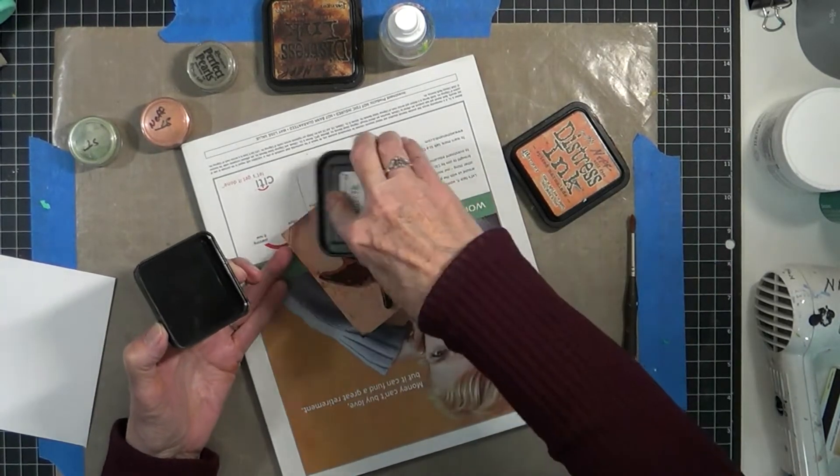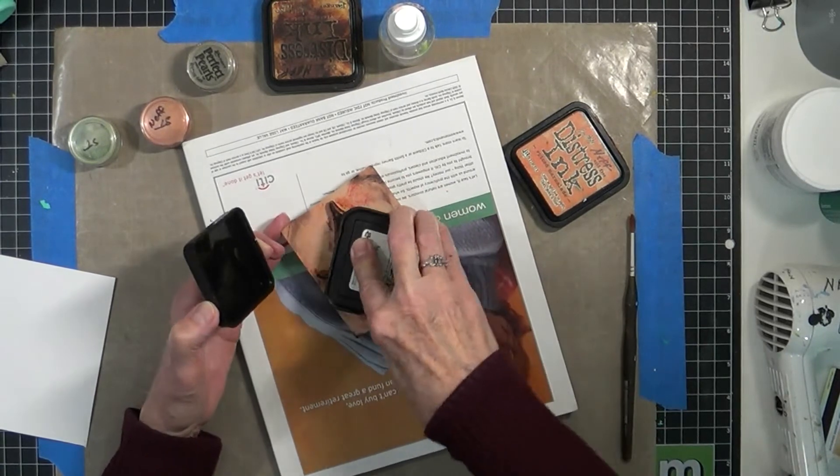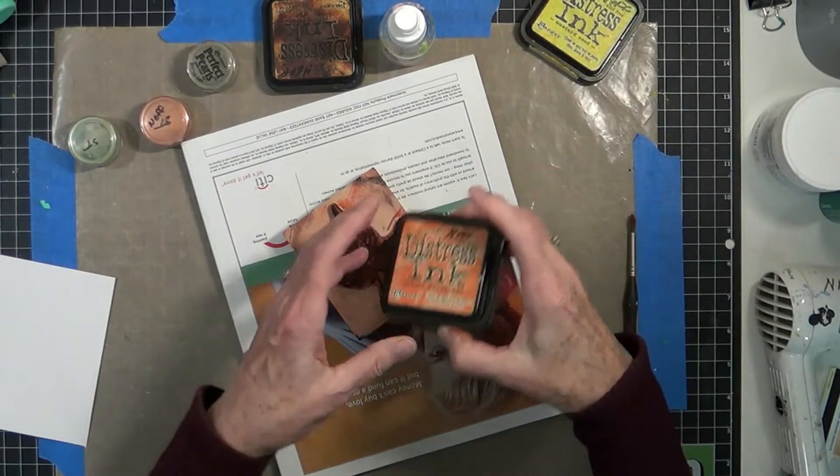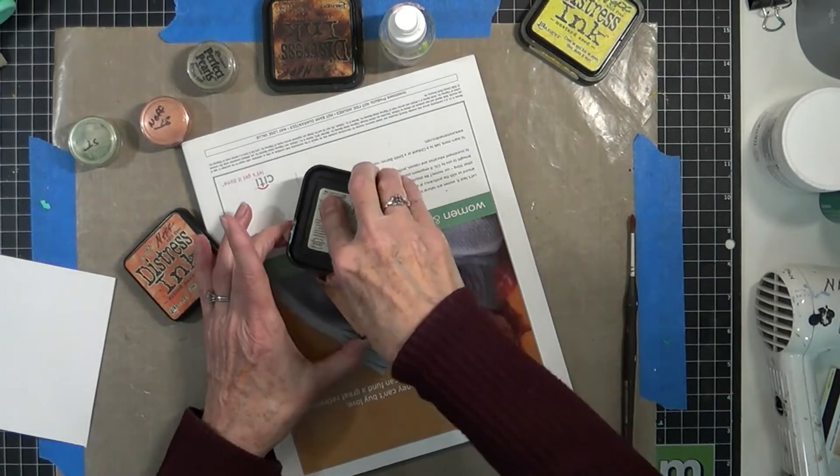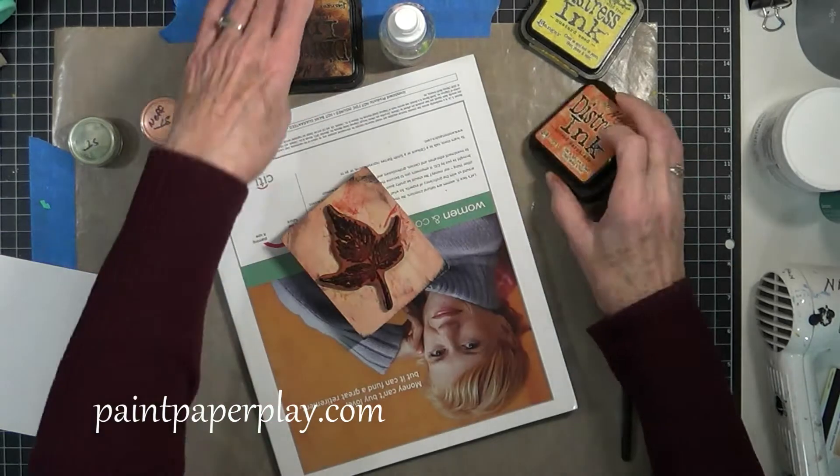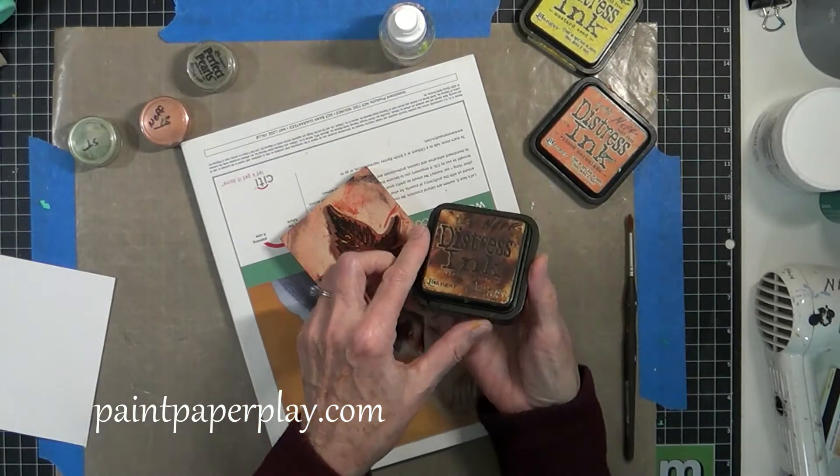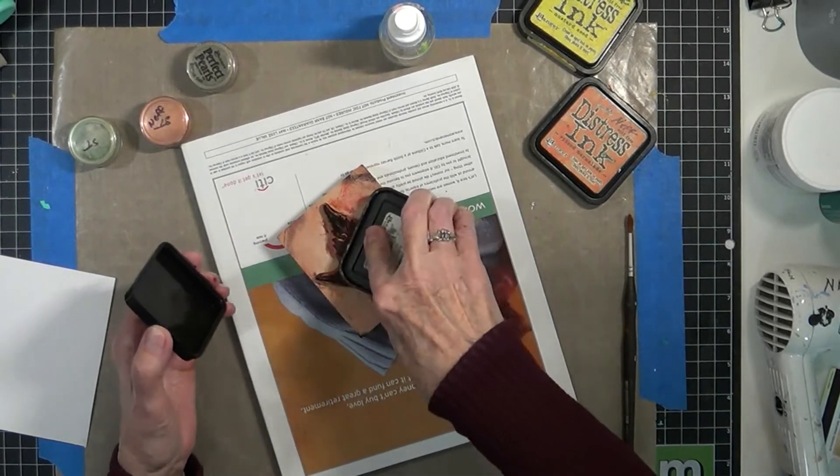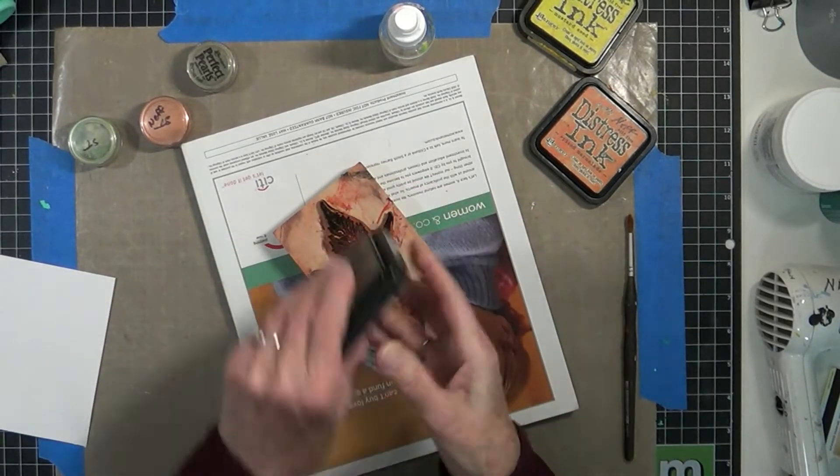Here I'm using the Distress Ink Mustard Seed and squishing it here and there into this leaf stamp. I'm going to add some dried marigold and again, just squishing it here and there. And then I'm going to go over that with some Vintage Photo. That'll help deepen some of the lines and the creases that you would normally see in a stamp.